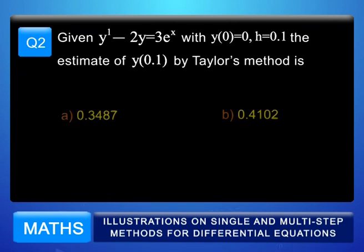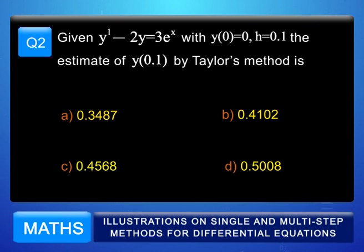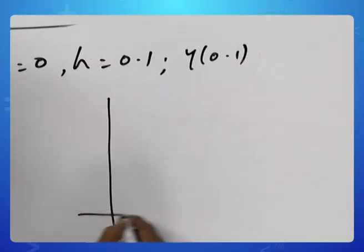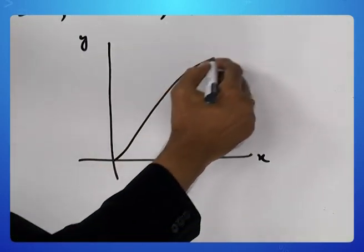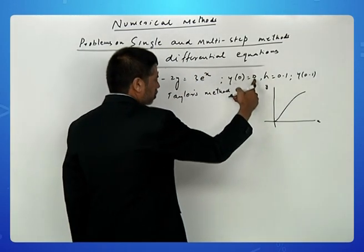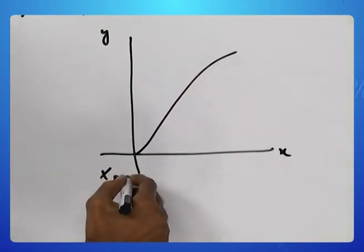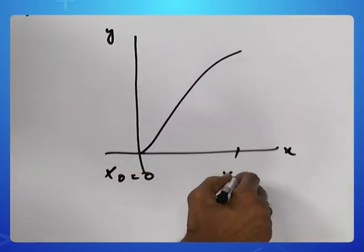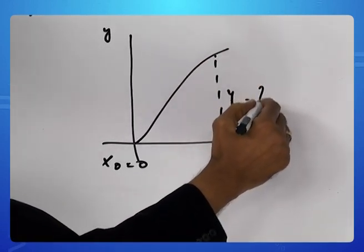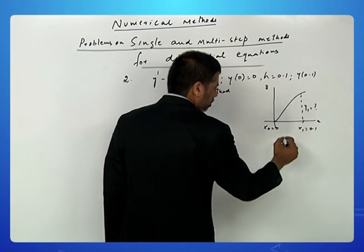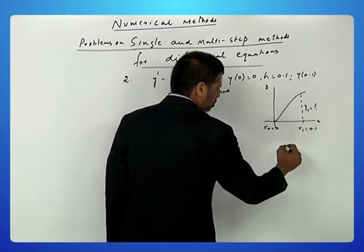Question number 2: given y' - 2y = 3eˣ, with y(0) = 0, h = 0.1, the estimate of y(0.1) by Taylor's method is. Because y(0) = 0, the solution curve passes through the origin. x₀ is 0, x₁ is 0.1, so we are trying to find y₁ where h = 0.1.